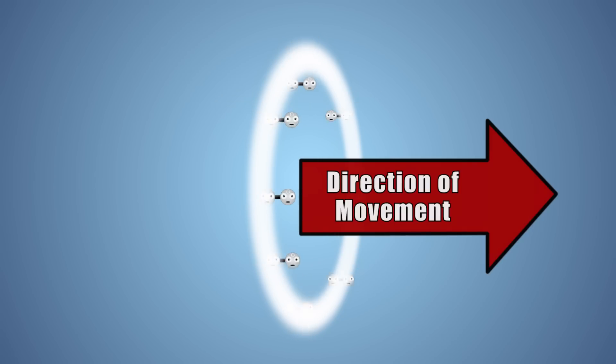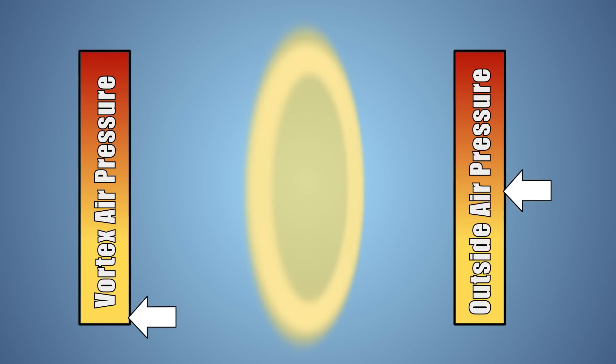The speed that our swirling air vortex travels also helps to keep its shape. Our vortex's speed of motion causes the air that it's made up of to have a lower pressure than the air in the environment.